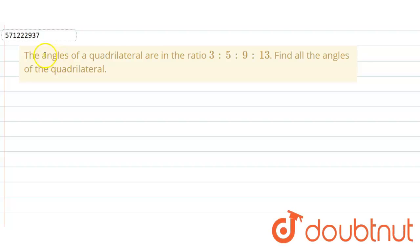In the given question, the angles of quadrilateral are given in the ratio 3:5:9:13. We have to find all the angles of the quadrilateral.